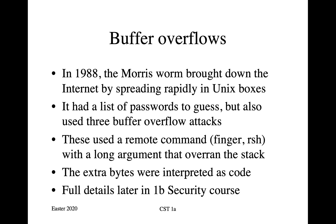Malware arrived in the world big time in 1988 when the Morris worm brought down the internet. It spread so quickly between Unix boxes that it flooded the internet of the day with traffic and caused it to wedge. It spread from one machine to another by a number of mechanisms — it had a list of 400-odd passwords that it guessed, and it also used three buffer overflow attacks.